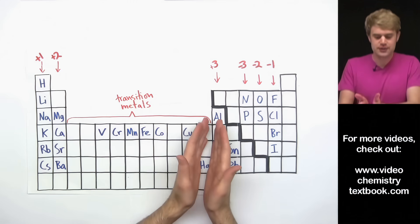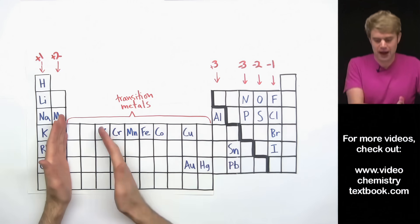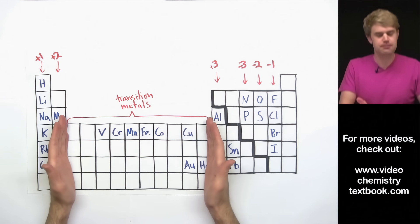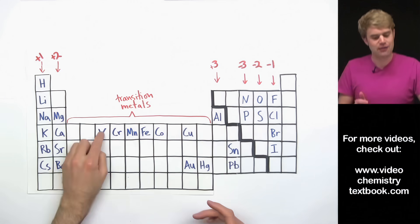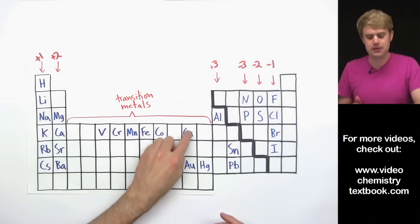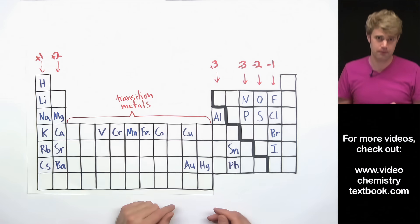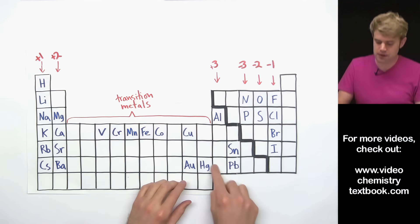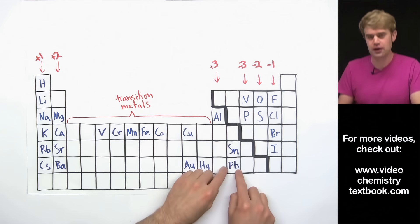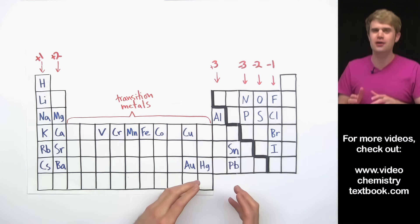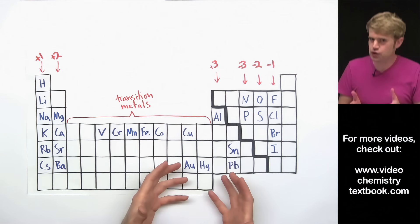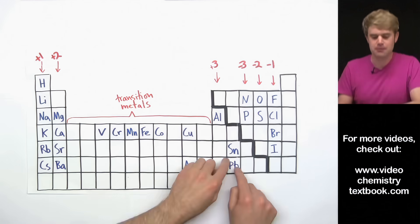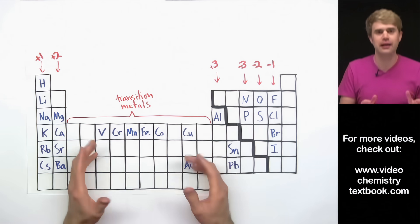The transition metals are the elements in this part of the periodic table here, and I've written in some of the most common. I'm also going to be talking about some of the metals over here, which aren't technically transition metals, but they act a lot like them.